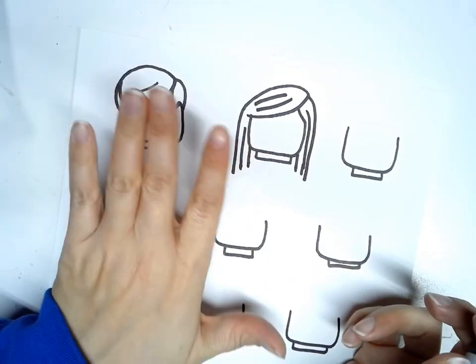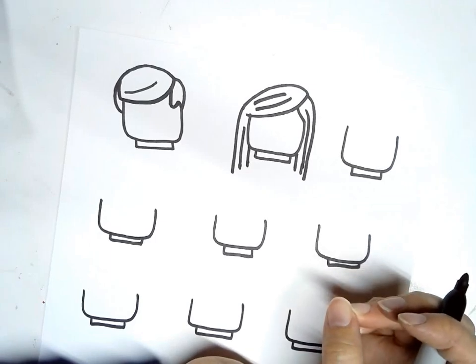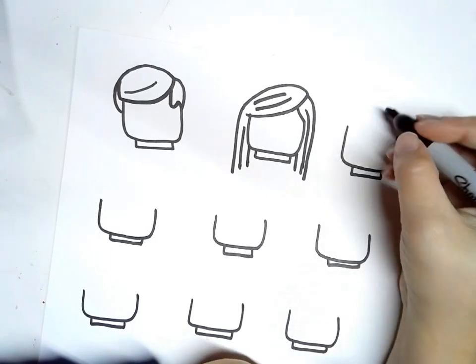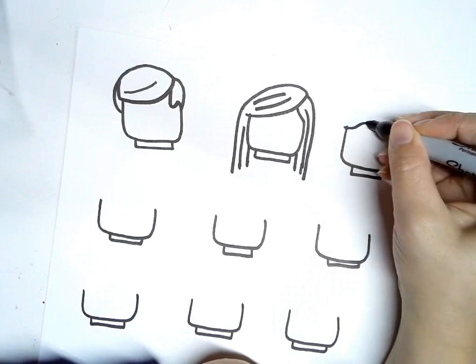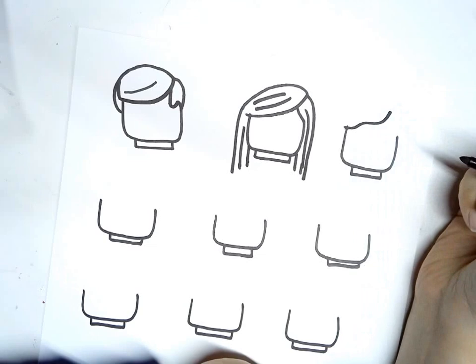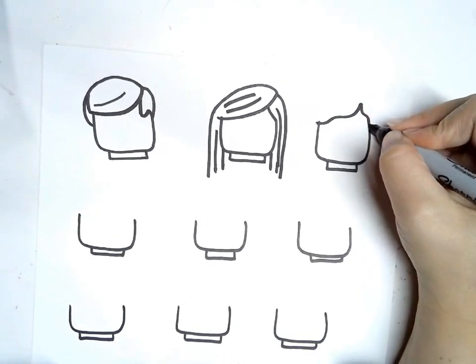Next we're going to do, what if you don't have straight hair? So these are both straight hair. So we'll do one with a curlier hair. So instead of making that curve straight, you're going to make it a little wavy. Like that. And then you'll make another kind of wavy one coming down like that.